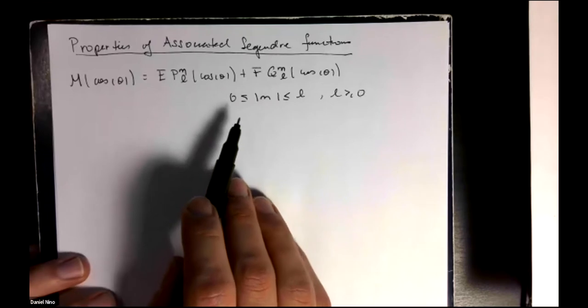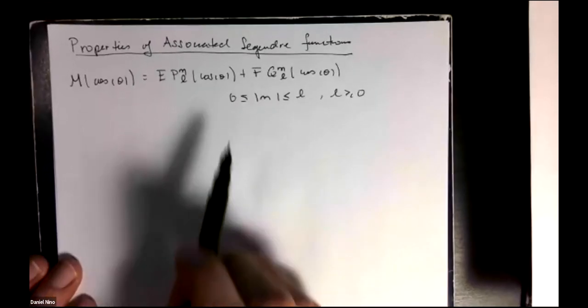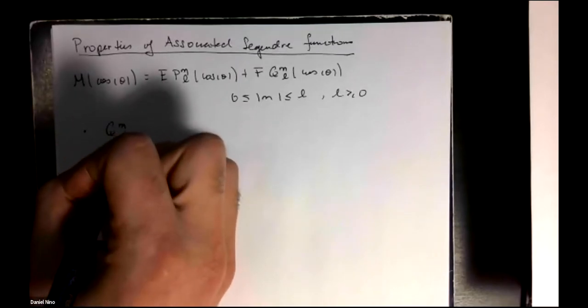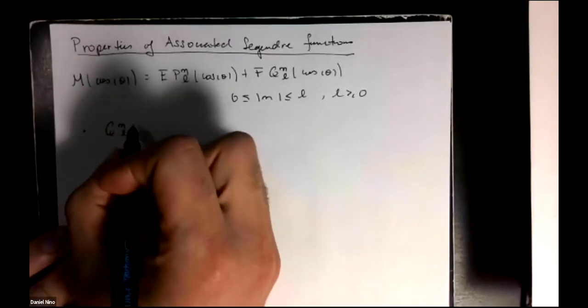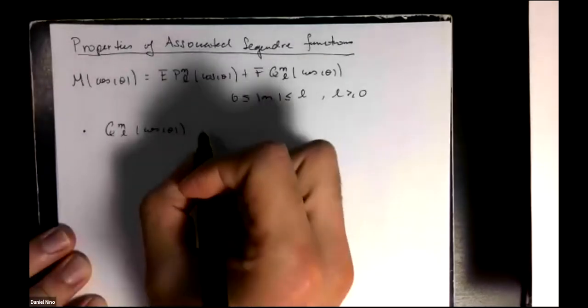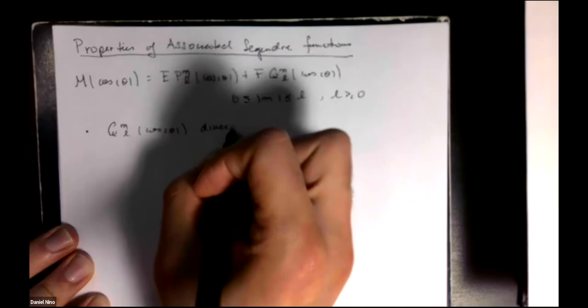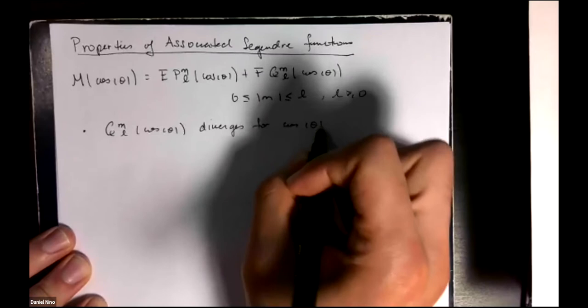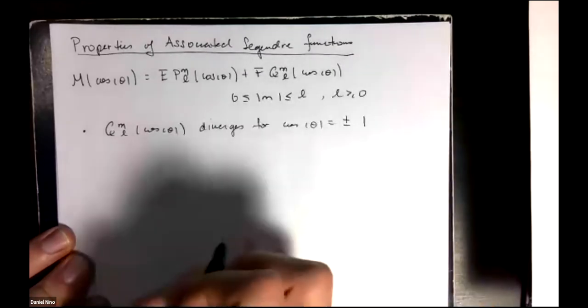So the first property that will be very useful to us is that the second one Q_m^l(cosine theta) diverges when cosine is equal to plus or minus one.